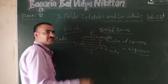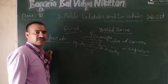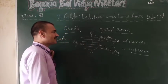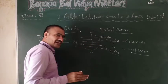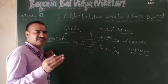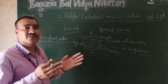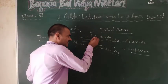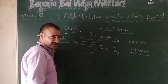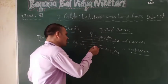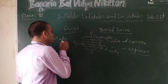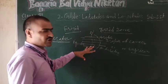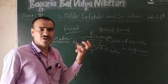We receive the maximum amount of heat from the sun in the torrid zone. There is moderate heat in the temperate zone. The Arctic Circle and Antarctic Circle areas are cold — that is the frigid zone, where temperatures are very low.